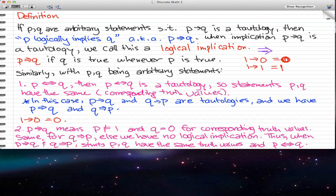Similarly, with P and Q being arbitrary statements, one of the other cases is that if P is logically biconditional to Q, then P biconditional Q is a tautology. So statements P, Q have the same corresponding truth values. You can say that whenever P is 1, then Q is 1. Whenever P is 0, Q is 0.